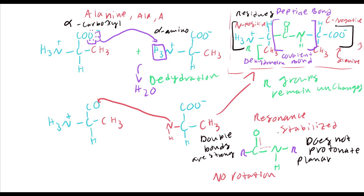Throughout the polypeptide chain, imagine you have a huge number of alanines combined — the whole structure just repeating. You're going to have a backbone for these peptide bonds. That peptide bond is kind of like the spine of the chain. Without those strong, rigid, planar connections, everything would fall apart.